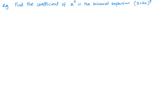Here we have our first example: find the coefficient of x to the power of 5 in the binomial expansion (3 + 2x) raised to the power of 8. So for x to the power of 5, this term is going to be 8C5 for my nCr, and it's going to be 3 to the power of 3 and then (2x) to the power of 5.